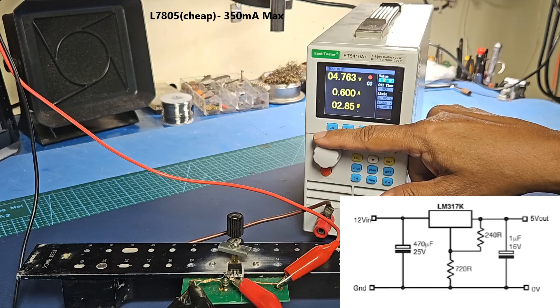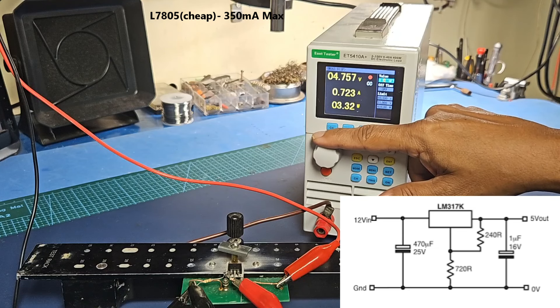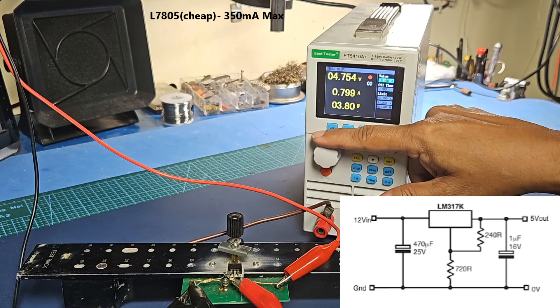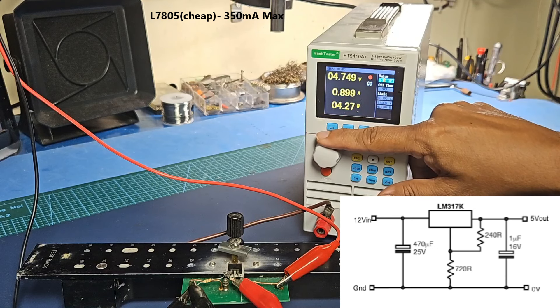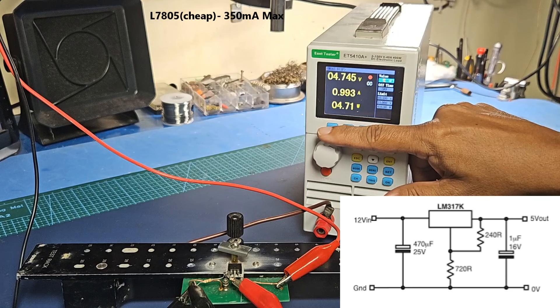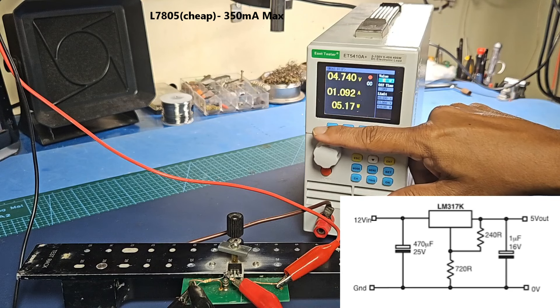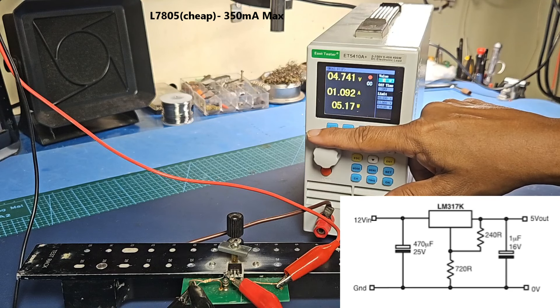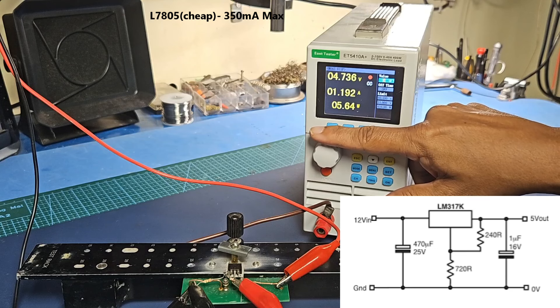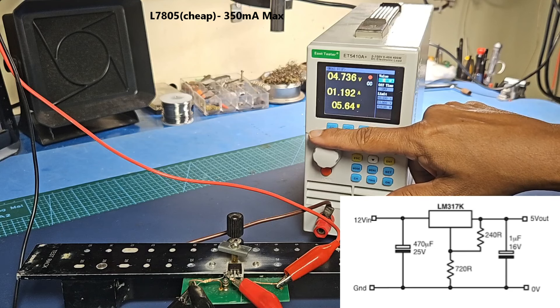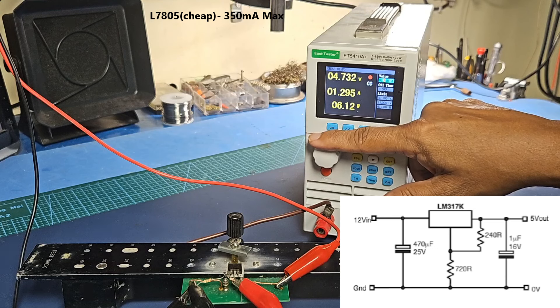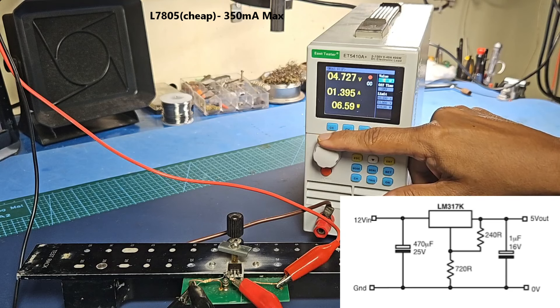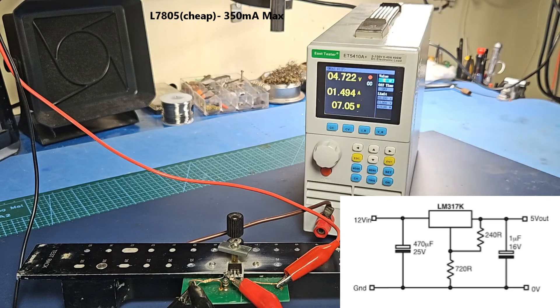At 700mA, 800mA, 900mA we're getting 4.7V. At 1A, 1.1A, and up to around 1.2A we're still at 4.7V.